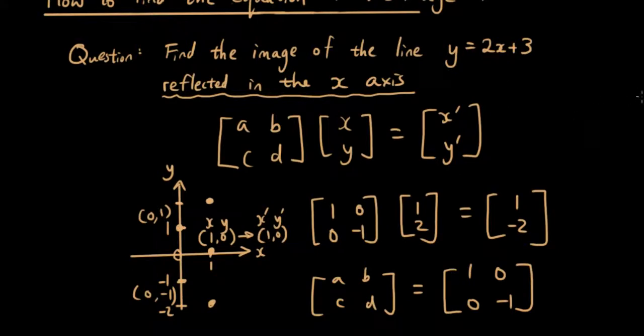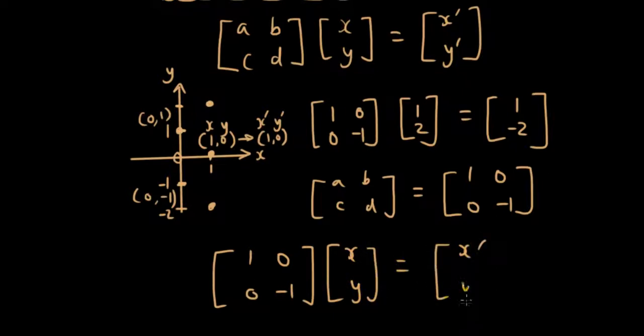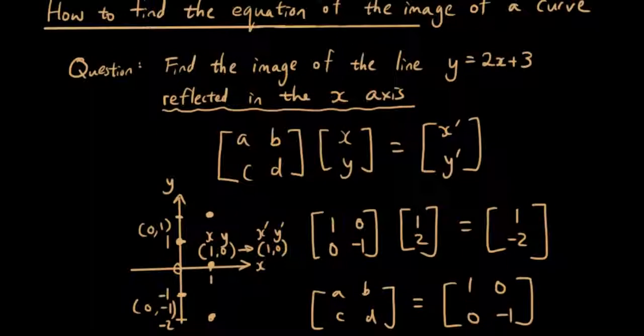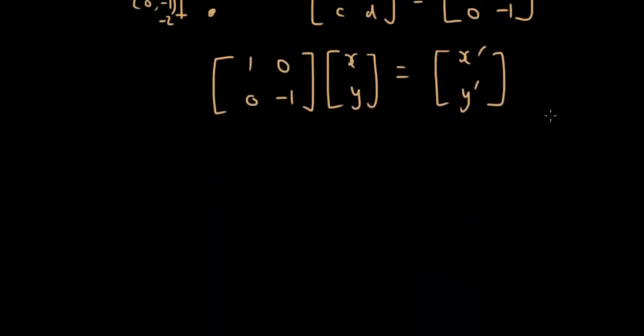So once we have that, we can now put that into ABCD. So we got 1, 0, 0, negative 1 times xy is equal to x dash y dash. Now, what's happening is we have our original equation, which is y equals 2x plus 3. So we have y equals 2x plus 3.